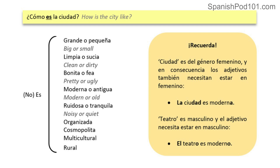Moving on to pregunta número dos: ¿Cómo es la ciudad? Here we use el verbo ser for descriptions — what is a city like? We can say es, and here is some vocabulary. Repeat after me: grande, pequeña, limpia, sucia — that's the opposite, right? Bonita, fea.